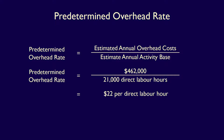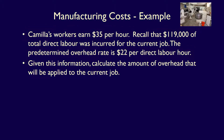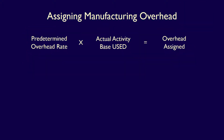What does that mean? It means that for every one hour that direct laborers work, $22 of overhead should be applied to the job. Now let's use this rate to apply overhead to the current job. Camilla's workers earn $35 per hour, and $119,000 of total direct labor was incurred for the current job. The formula to assign manufacturing overhead to each job is the predetermined overhead rate multiplied by the actual activity base used in the job, which equals the amount to be applied.